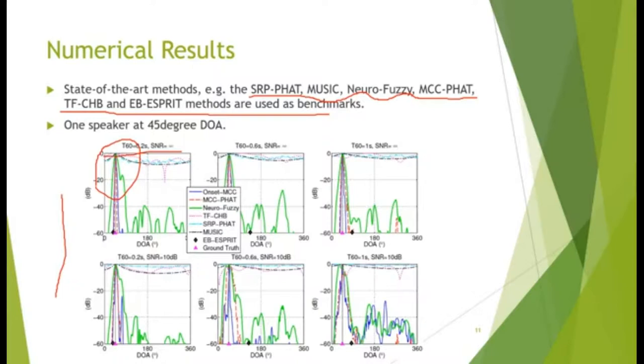However, when the reverb increases, the TF-CHB and the ESPRIT start to produce errors. This is the ground truth. You can see the peaks do not align. Performance of all the other methods degrades as SNR decreases, but they still produce peaks close to the ground truth.